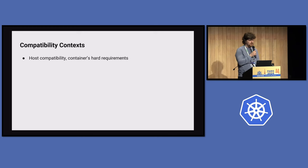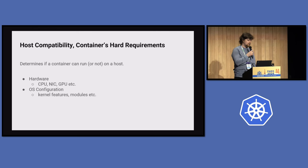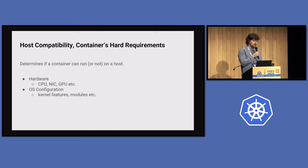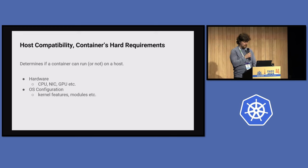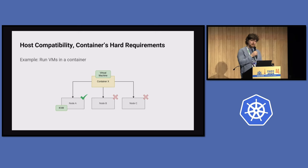The first compatibility context is host compatibility — the container's hard requirements. This is about whether a container can work on the host or not. An example: a container may require specific hardware like CPU, NIC, or GPU — CPU for instruction features, NIC for performance or features, and GPU for computation. Additionally there are OS aspects: kernel features, modules, and the whole kernel configuration. A concrete example is running a KVM virtual machine inside a container. If KVM is available on node A but not on nodes B and C, your container will not run there. That is a hard requirement.